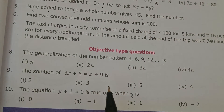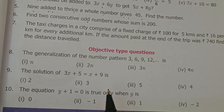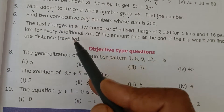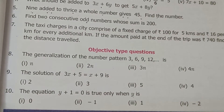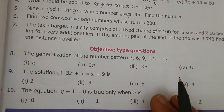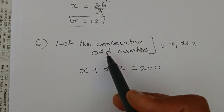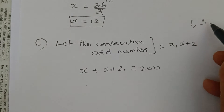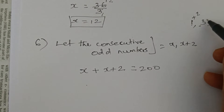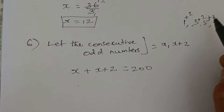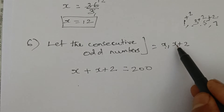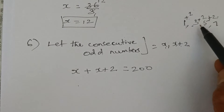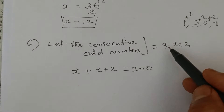For example, 1 and 3 are consecutive odd numbers: 1 + 3 = 4, 3 + 5 = 8, 7 + 9 = 16. We need two consecutive odd numbers that add up to 200. Let the consecutive odd numbers be x and x + 2. If the first number is 1, the next odd number is 3, which is 1 + 2. Each next odd number is obtained by adding 2. So first number is x and next is x + 2.